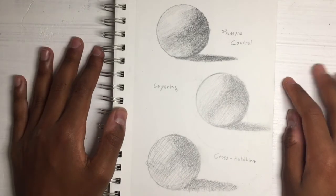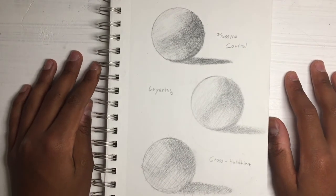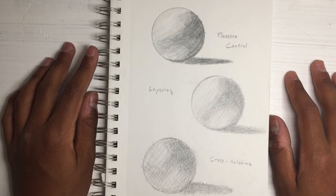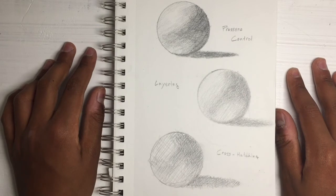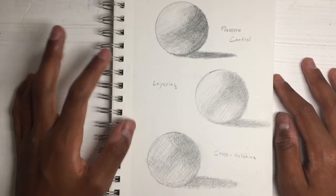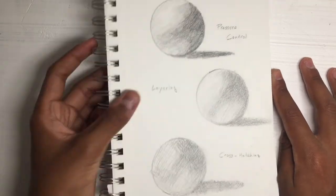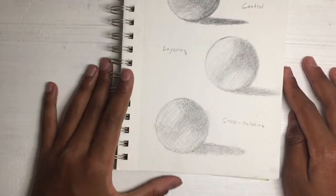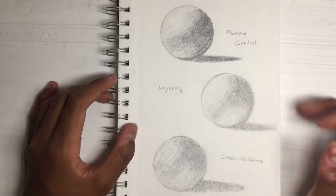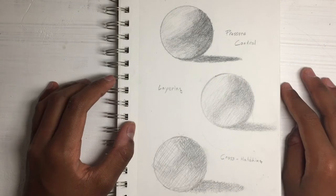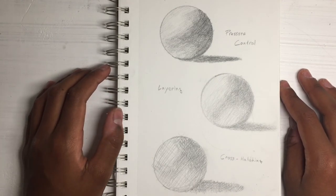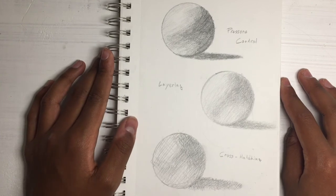So that brings us to the end of our shading tutorial. But before I go I wanted to mention a few things about the three drawings I have here. With pressure control the darker areas are a lot darker and so are the shadows compared to layering. Cross hatching while having an interesting art style is a lot less smooth than layering or pressure control. Obviously each of these has their own pros and cons and you can pick your favorite and use that in your drawings.